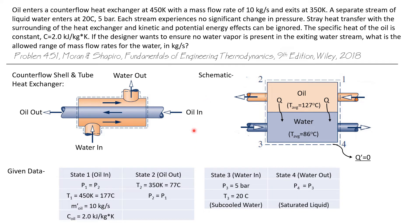So what do we know about these flows? We have an inlet for oil, an exit for oil and an inlet for water and an exit for water. Let's look at the oil. State one is where the oil comes in. We don't know its pressure, but we know the pressure doesn't change as it flows through the heat exchanger. The temperature of the oil at the inlet is 450K, which is 177°C. The mass flow rate of oil is given as 10 kg/s. The specific heat of the oil is said to be constant at 2 kJ/kg·K.